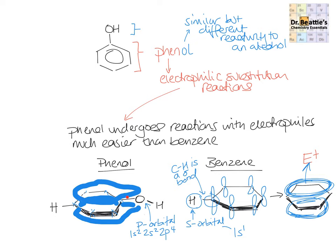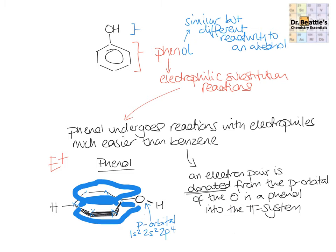With this extra electron density around the ring, we therefore have a stronger area of electron density. When this meets an electrophile that is electron deficient, there is a greater attraction between the highly electron-dense area and the electrophile. The take-home message for the exam is: an electron pair is donated from the p orbital of the oxygen of phenol into the pi system — and that's our explanation for why it undergoes electrophilic substitution much more easily than benzene.